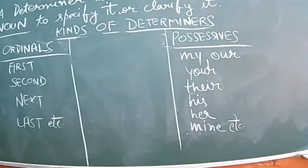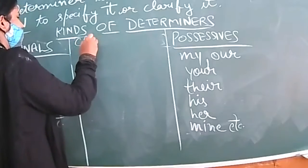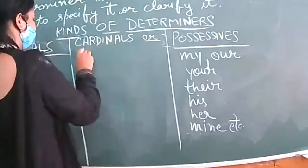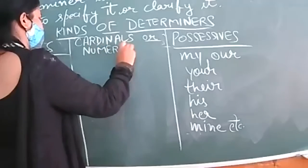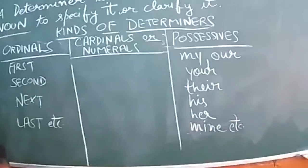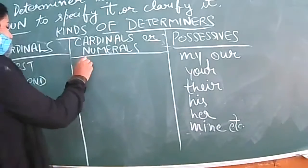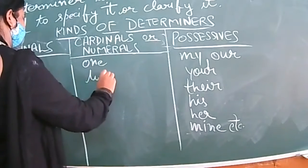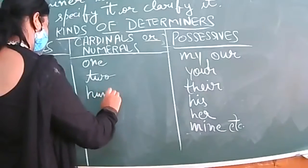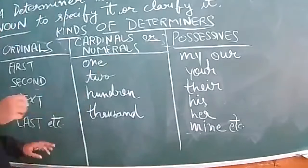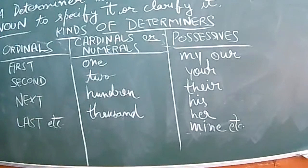After ordinals we have cardinals, also called numerals. Cardinals are the exact numbers: one, two, three, ten, hundred, thousand, and so on. When the exact number is written, it becomes a numeral or cardinal.